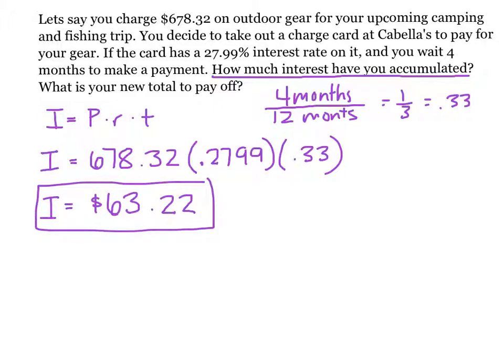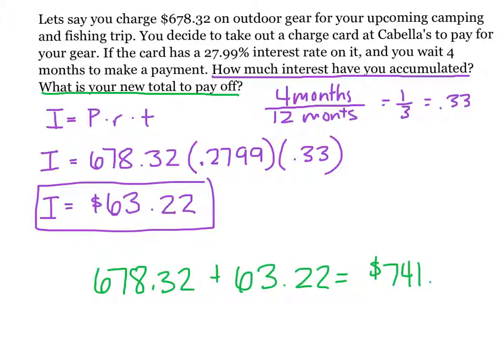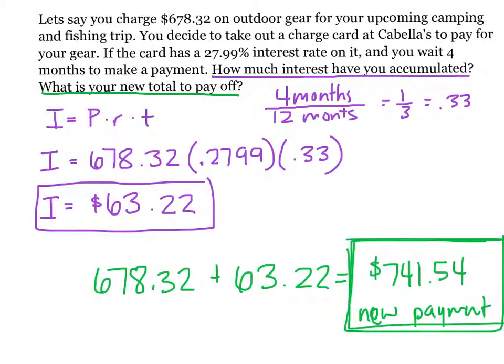Now the second question asks us, what is our new total to pay off? Here we're just taking how much money we owed, or $678.32, and adding to it the interest that we now owe of $63.22, for a grand total of $741.54, which is our new payment that we have to make. So when you do get a credit card, do not let the interest accumulate, because now you owe a lot more than you ever spent.